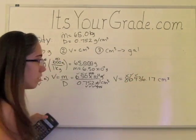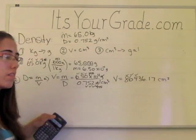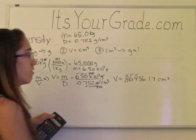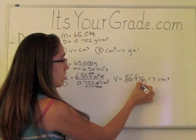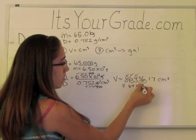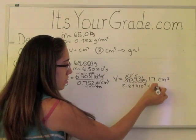So our answer will have to have three significant figures. Well, this has more significant figures than what we need, so we will have to use scientific notation: 8.64 times 10 to the 4th centimeters cubed.